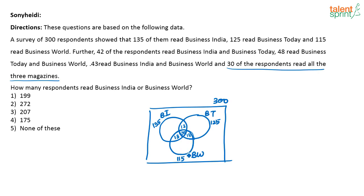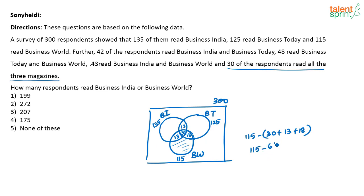How many people read only Business World? This full set is 115. So 115 minus (30 plus 13 plus 18) gives the number of people reading only this part — only Business World. That is 115 minus 61, which is 54. So there are 54 people who read only Business World.